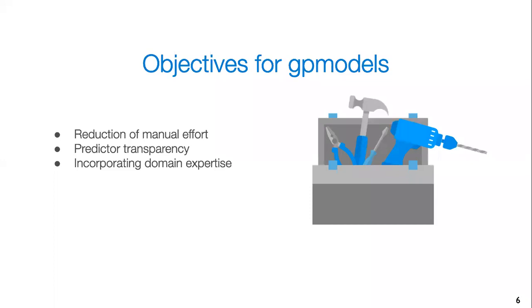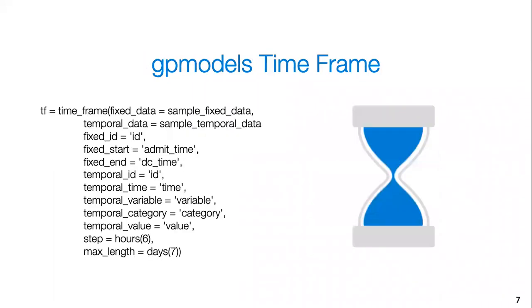Now I'm going to give a brief overview of exactly how this package works. At this highest level, there are considered global parameters, and then they're considered predictor parameters. The global parameters exist and are applied to all of the predictors that you're creating. This is done with this time frame object that you're creating.